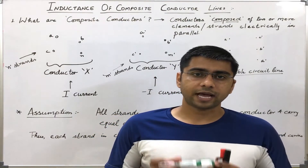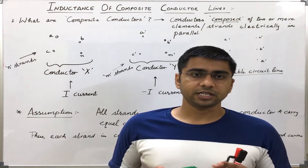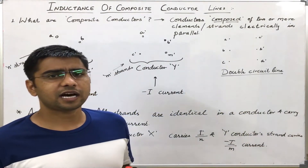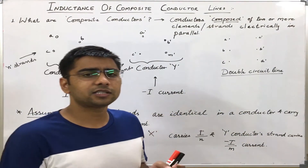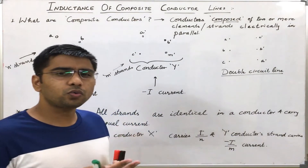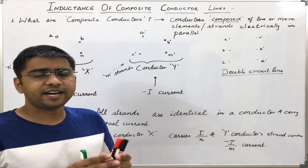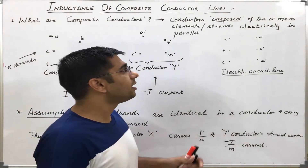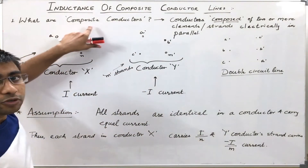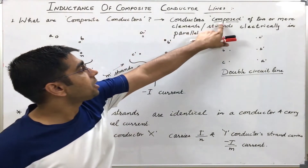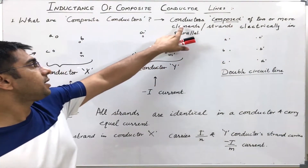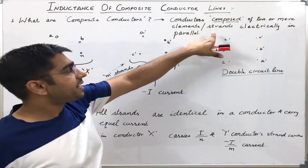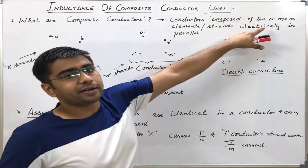Before going to do that, what we want to see is: what are composite conductors? Composite conductors are those conductors which are composed of two or more strands or elements which are connected electrically in parallel. The word composite comes from this word composed — that is, conductors which are made of two or more elements or strands which are electrically in parallel.